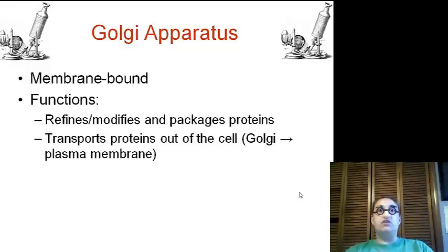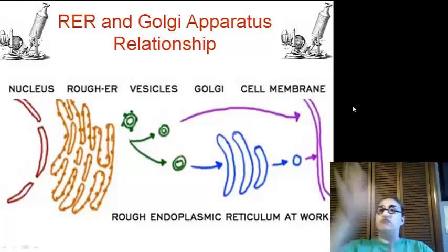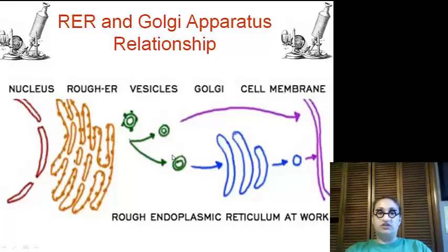The Golgi apparatus is going to be our UPS, our shipping and packaging plant. It is membrane bound, and it functions to refine, modify, and package proteins to ship them out of the cells. So an example is we have our nucleus, and it sends out the RNA over here to the ribosome on the rough ER to create the protein. Well, some proteins that just come out of the ER can go straight to the cell membrane and go out. But others must be packaged. So they come over here to the Golgi apparatus and go through a series of packaging processes. Then, it is allowed out of the cell.